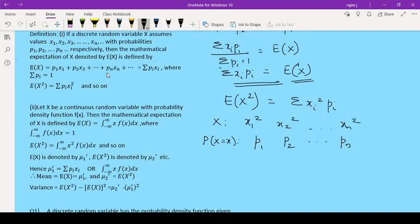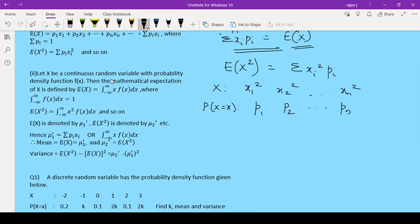So, p1, p2, etc., pn. Then, expectation of x square is summation of xi square into pi. Same way, if I want to write expectation of x cube, then this will be summation of xi cube into pi.